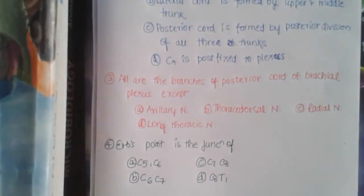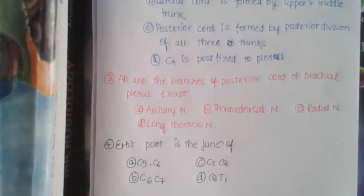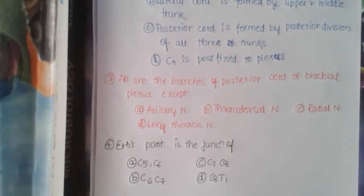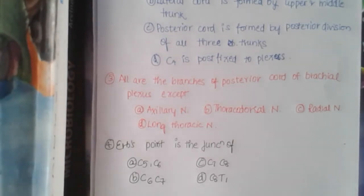— (a) axillary nerve, (b) thoracodorsal nerve, (c) radial nerve, (d) long thoracic nerve. The fourth question is: Erb's point — it is a junction of is it (a) C5-C6, (b) C7, (c) C8, or (d) C6-C7-C8-T1?